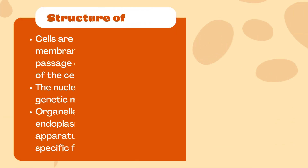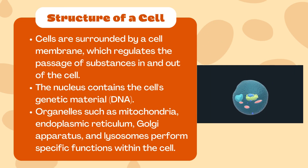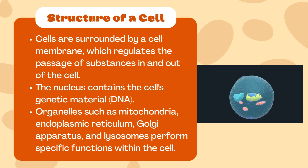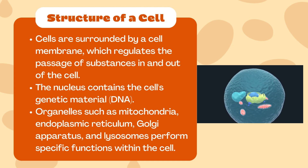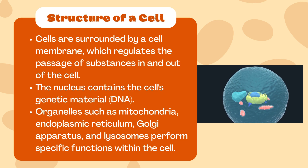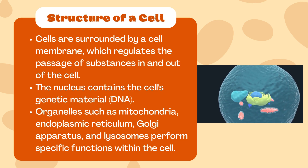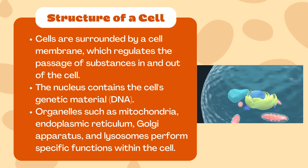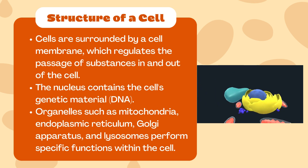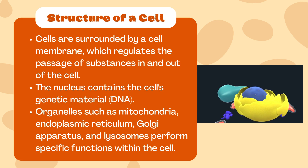Cells have a remarkable structure. They are surrounded by a cell membrane, which acts as a barrier and controls the movement of substances in and out of the cell. Inside, you'll find the nucleus, which contains the cell's genetic material, and various organelles like mitochondria, endoplasmic reticulum, and Golgi apparatus, each with its own specific function.